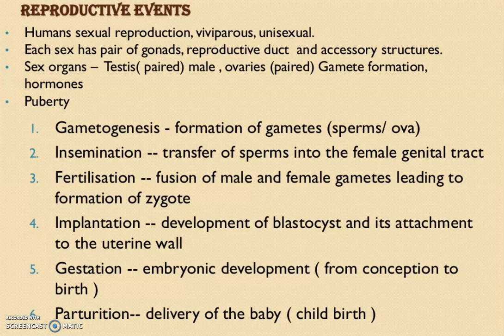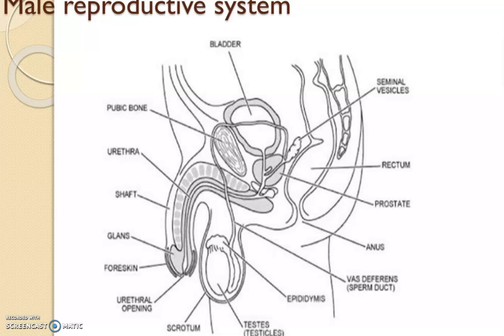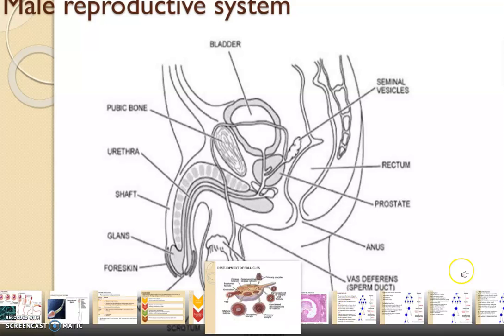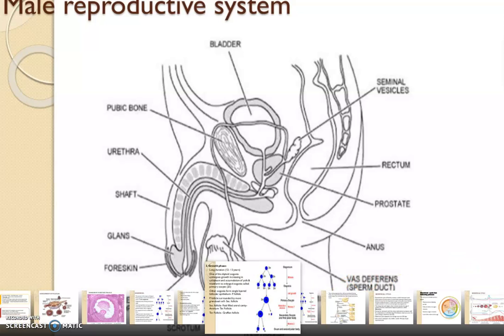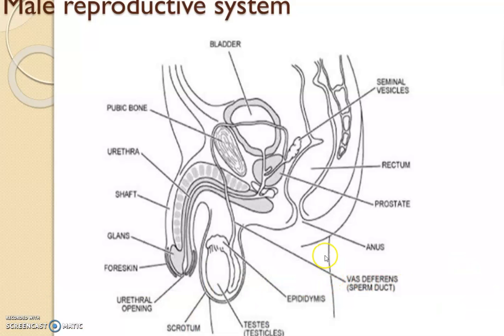The male reproductive system consists of the epididymis, testis, scrotum, urethral opening, foreskin, glans, shaft, urethra, vas deferens tube, pubic bones, rectum, and prostate gland.